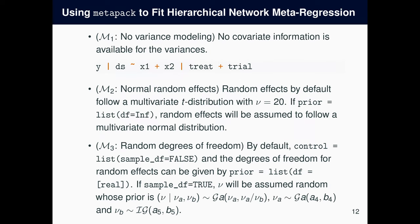So there are three modeling options for network meta-regression, but I would like to mention that unlike multivariate meta-regression, these modeling options are not specified by a single input parameter, like model equals something, a string. The first modeling option is no variance modeling. So no covariate information is available for the variances. To achieve this, simply omit the second part of the right-hand side.